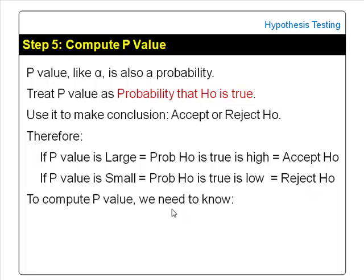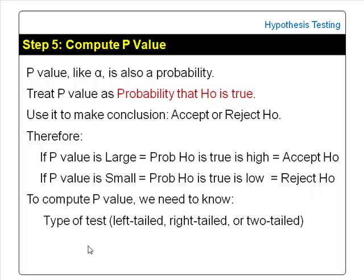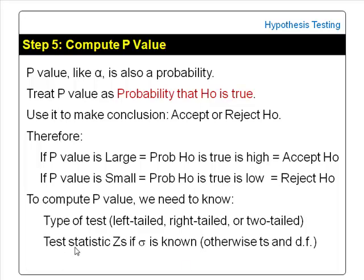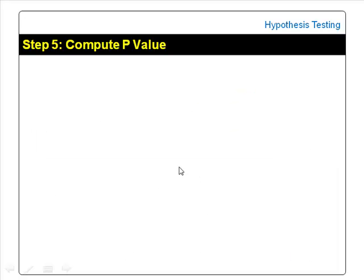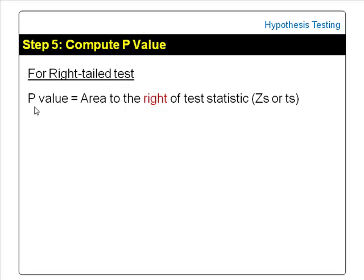To compute the p-value, we need to know the type of test — whether it is a right-tailed test, left-tailed test, or two-tailed test. We also need to know the test statistic zs, if the population standard deviation sigma is known. Otherwise, we will use ts and the degrees of freedom. For a right-tailed test, the p-value is given by the area to the right of the test statistic, zs or ts.